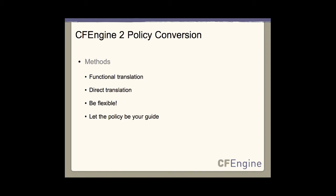Before getting into the nuts and bolts of a policy conversion, it's really worth exploring the various methods available to you. For simplicity's sake, I'm going to cover two: a functional translation, which looks at the reasons behind the policy, and a direct translation that pretty much just looks at the lines themselves. Be flexible and use the method that makes the most sense. Depending on your environment, you might want to mix and match. Some policies could be very straightforward and easily rewritten using CFEngine 3, while other policies may be difficult to decipher.